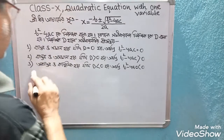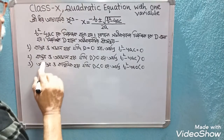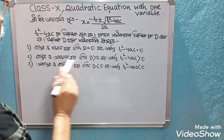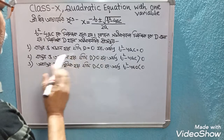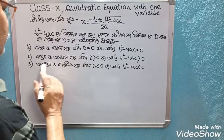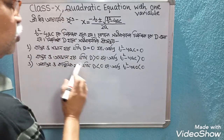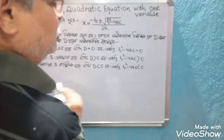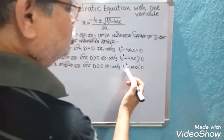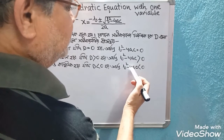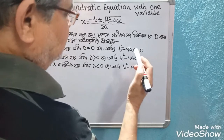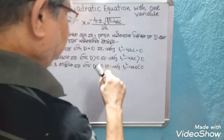If you look at the quadratic equation with one variable, there is no variable. If you look at the quadratic equation, you will find minus 4c less than 0.